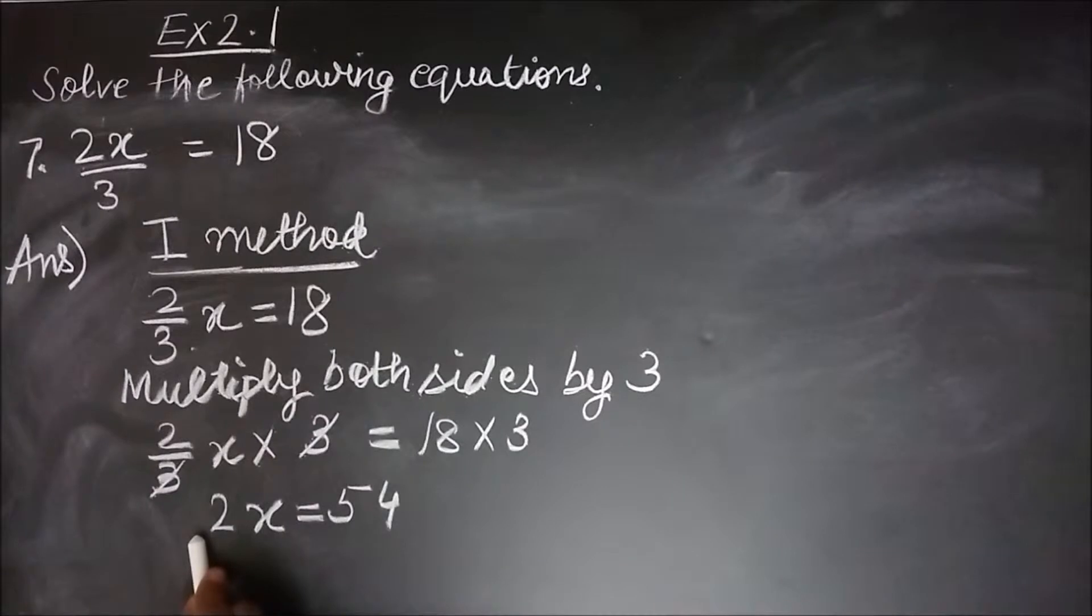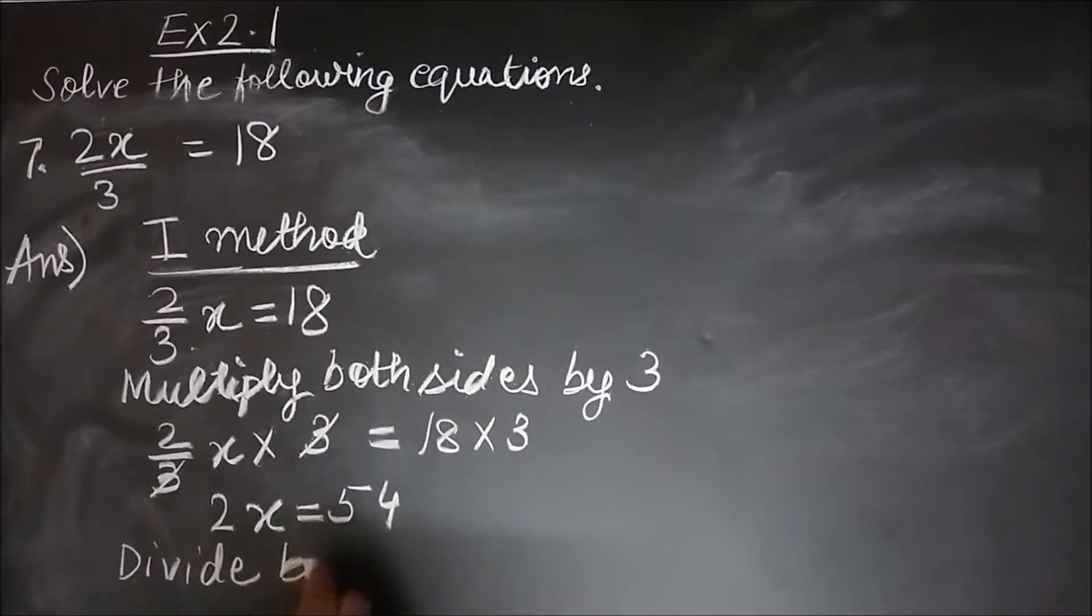Next, I am left with only one constant on the left hand side, that is 2. 2 is getting multiplied here. To remove 2, I need to divide this by 2. So I will say divide both sides by 2.